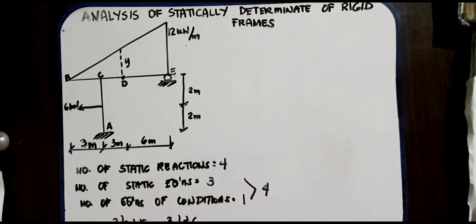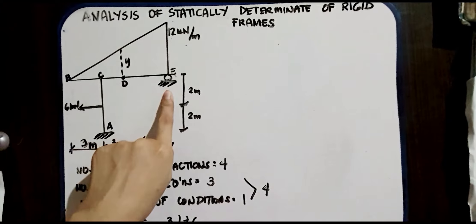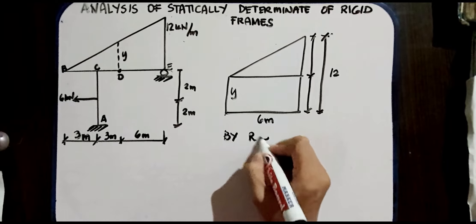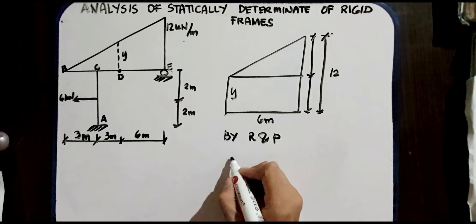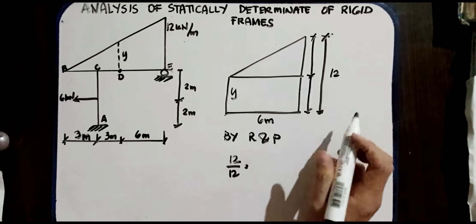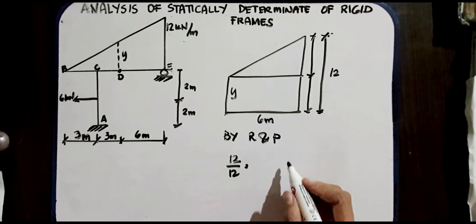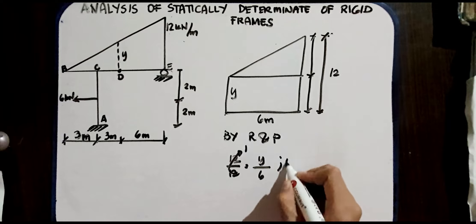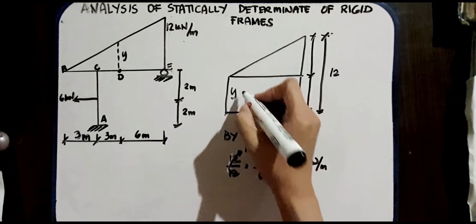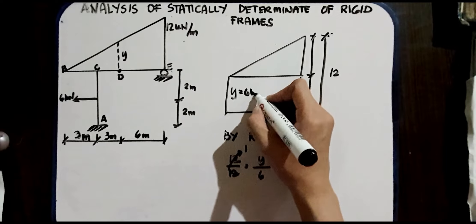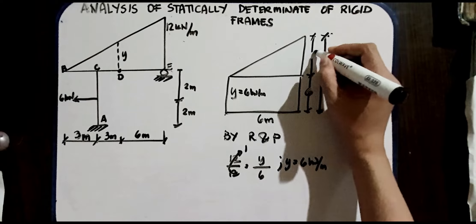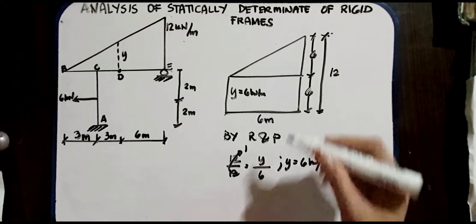Next, we need to determine EV and DV. We isolate the section and use ratio and proportion. The big triangle is 12 over 12, and for the small triangle, we find Y. So Y over 6 (since 3 + 3 = 6) gives Y equal to 6 kN/m. Therefore, we place 6 kN/m here, and since 12 minus 6 is also 6 kN/m on the other part. Next, we determine the reactions.